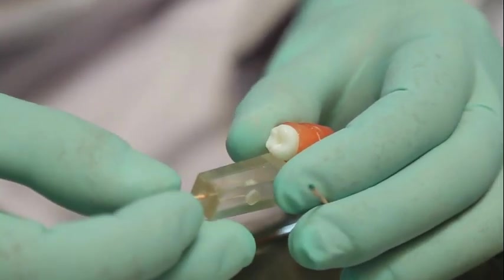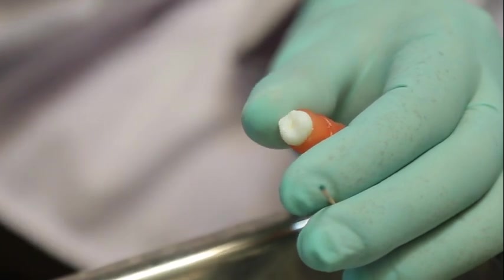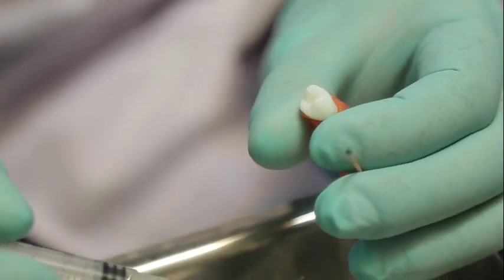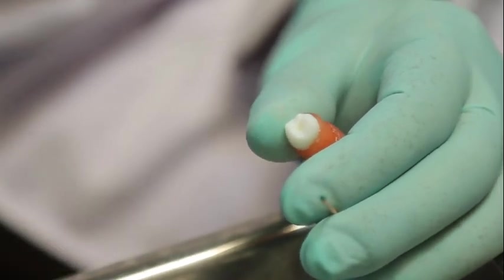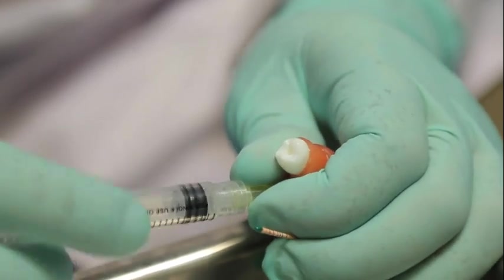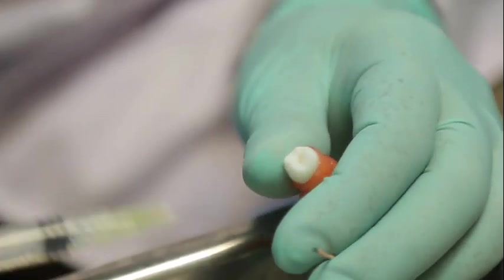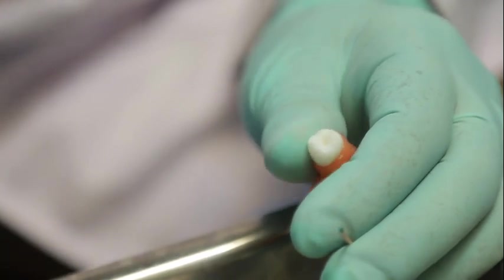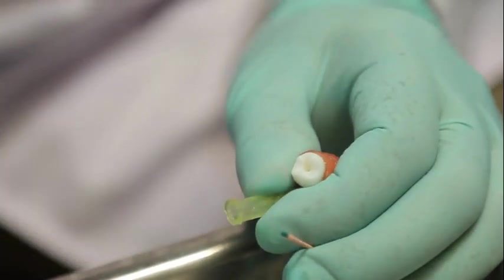First I will demonstrate the irrigation protocol in this premolar. For irrigation you have to use the side vented 30 gauge needle with a luer lock syringe because this type of needle will clog very easily. So it is better to use the luer lock syringe to avoid spillage of the irrigant.